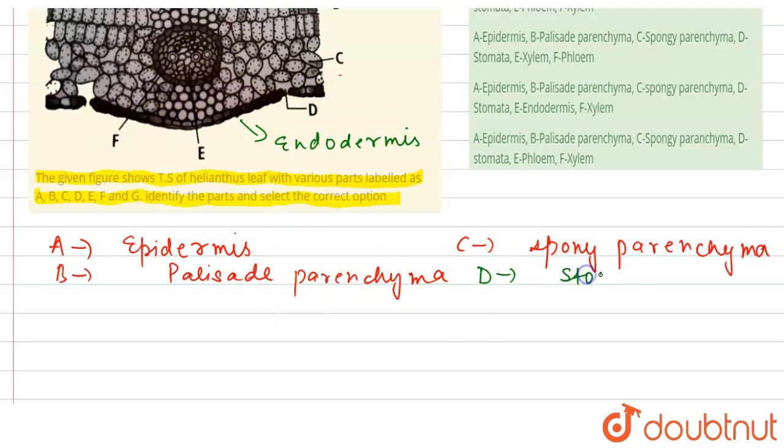Now this E part is the phloem. So phloem is one of the vascular tissues which helps in the transportation of food.